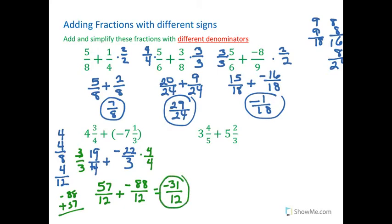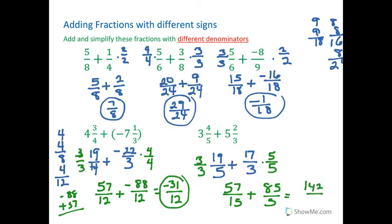And for this one, let's see, 3 times 5 is 15, 16, 17, 18, 19 fifths plus 5 times 3 is 15, 16, 17 thirds. They're both positive. 5 and 3 are relatively prime. So once again, I can multiply this by 5 over 5 and this by 3 over 3. And I'm going to get another 57, I guess. No imagination in this problem. Plus, and then 17 times 5 is 85 over 15. And if I add the two numerators together, I'm going to get 142 over 15.